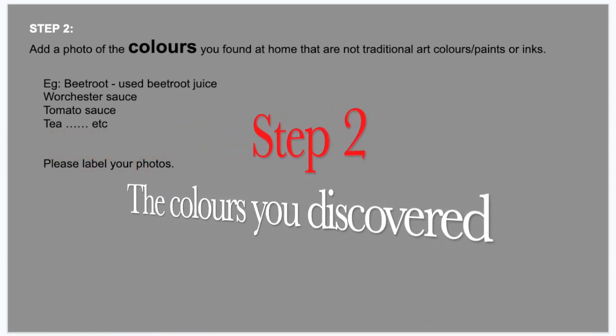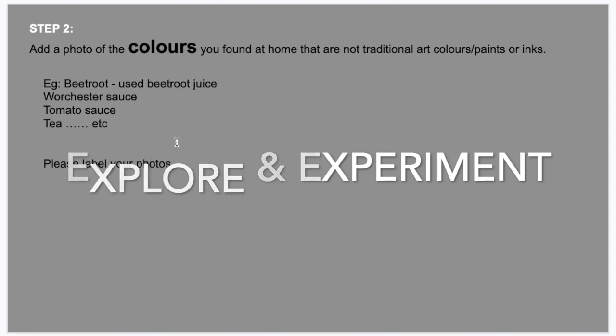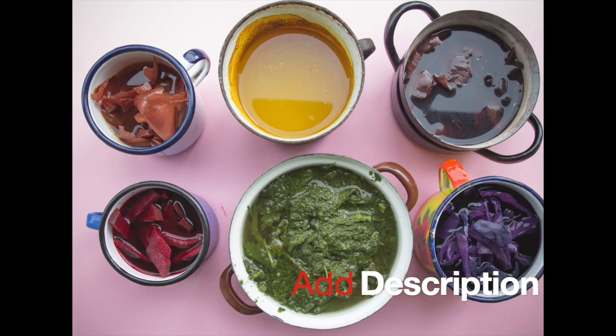Step two: add a photo of the colours you found at home that are not traditional art colours, paints, or inks — so beetroot, beetroot juice, Worcestershire sauce, tomato sauce, tea. Please label your photos because otherwise it might just look like a brown substance. What could it be? Marmite? Tea?